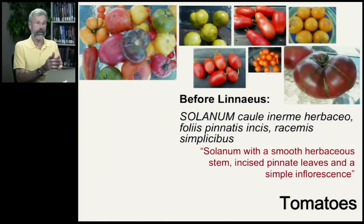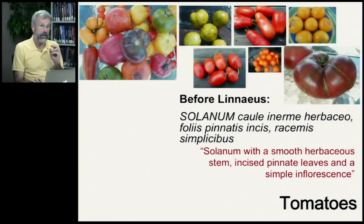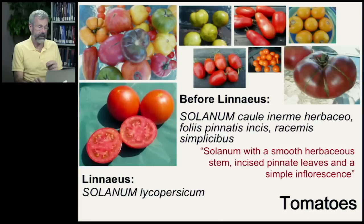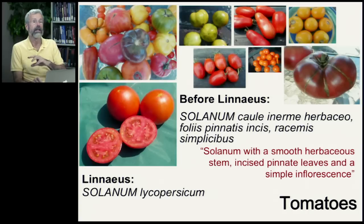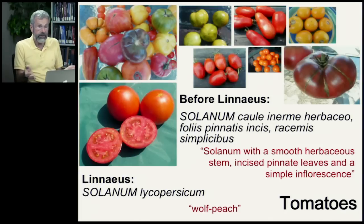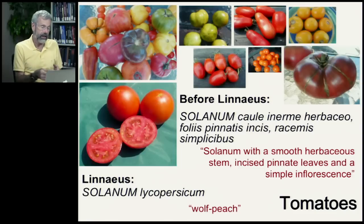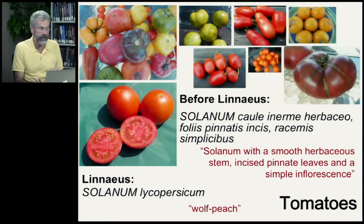Linnaeus came along and simplified everything down to just two words. The Linnaean binomial for the tomato is simply Solanum lycopersicum. Still a tomato, same as before, but now we know that when you say Solanum lycopersicum, you have a tomato. Interestingly, lycopersicum translates to 'wolf peach' — which is hard to explain, but that's just the way it is.